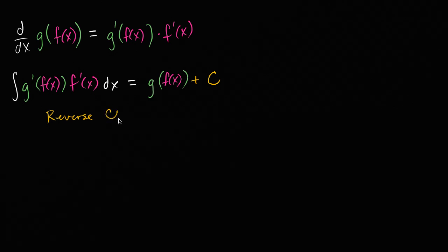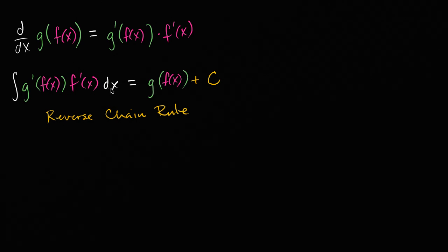The reverse chain rule is essentially — or exactly — what we did with u-substitution; we just did it a little bit more methodically. This is really a way of doing u-substitution without explicitly going through all the steps, or doing u-substitution in your head, making those types of problems a little bit faster.